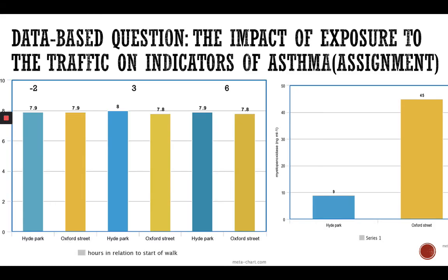Here you have a database question about the impact of exposure to traffic on indicators of asthma. There is Hyde Park and Oxford Street — Hyde Park is a park full of trees, while Oxford Street is a place with a lot of traffic. The question asks: before and after sitting in each location for three to six hours, what happens to your pH level in your body? And what happens to myeloperoxidase, which is a very harmful substance for our body and lungs? The levels in Hyde Park are less than those in Oxford Street, and this will be your assignment — to discuss what you see in the graph.